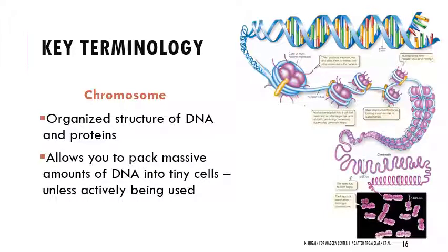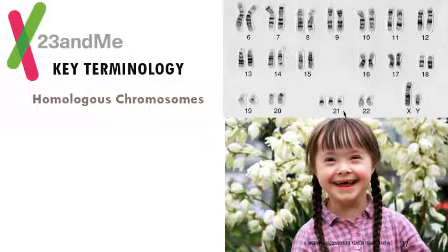You're able to pack massive amounts of DNA into really tiny cells unless they're being actively used. The top right image is a karyotype — a photo of chromosomes lined up to quickly identify any chromosomal abnormalities. In this case, it's an image of trisomy 21, where this individual has three copies of chromosome 21. This is called Down syndrome. It's a very common trisomy — there are many trisomies that result in really debilitating conditions that are not survivable, but Down syndrome is absolutely survivable with associated health risks.